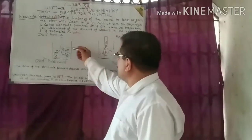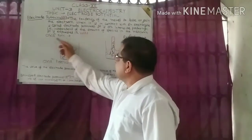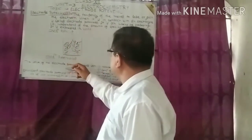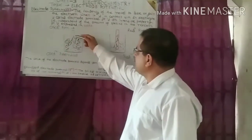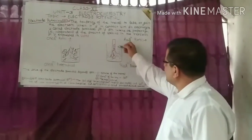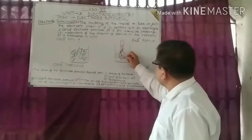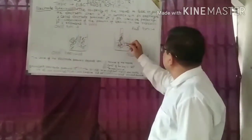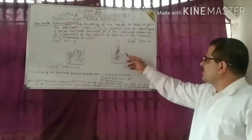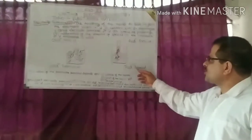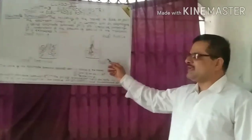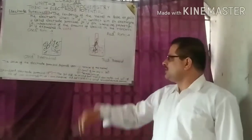When a metal rod loses electrons, oxidation reaction takes place, and the potential developed between the metal rod and solution is called oxidation potential. When a metal ion gains electrons, reduction reaction takes place, and the potential developed between the metal rod and solution is called reduction potential. The value of electrode potential depends on the nature of the metal, concentration of the ions in solution, and temperature.